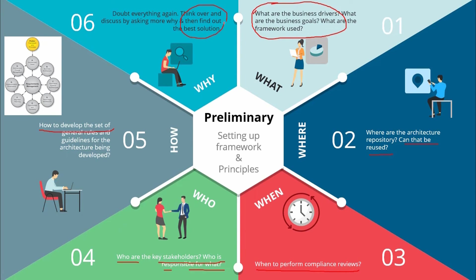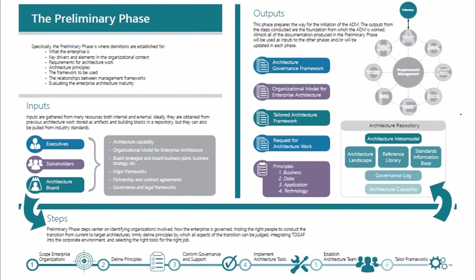So in a nutshell, things to remember here is we will define the whole enterprise in this preliminary phase, then define the requirements for architecture work, followed by defining the architecture principles that will inform any architecture work later, define the framework to be used and establish the relationships between management frameworks. Finally, evaluate the enterprise architecture maturity of the organization. Let's move on.